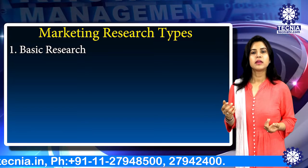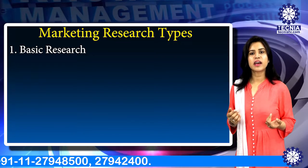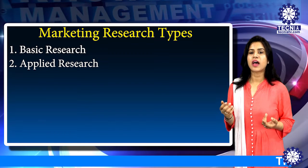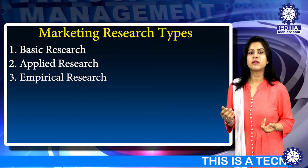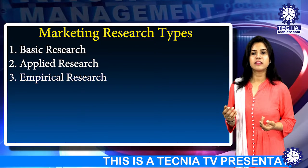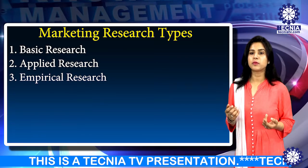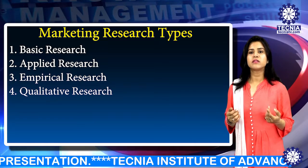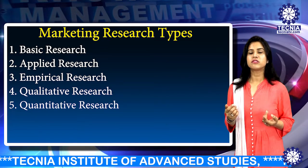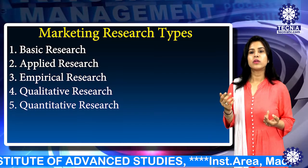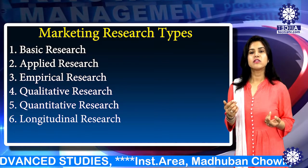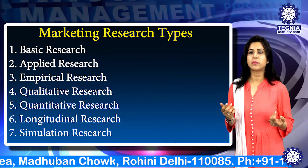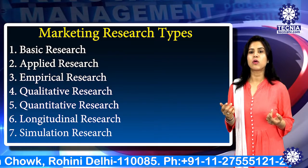Coming on to their brief explanation: Basic research — research for the sake of enhancing knowledge. Applied research — need-based research having high practical relevance. Empirical research — data-based research in which primary data is collected, analyzed, and subject to hypothesis testing. Qualitative research — concerned with qualitative phenomena, generally involving the study of human behavior. Quantitative research — involves the measurement of phenomena in quantitative terms. Longitudinal research — spread over a longer period of time. Simulation research — involves creation of an artificial environment very similar to the real environment.